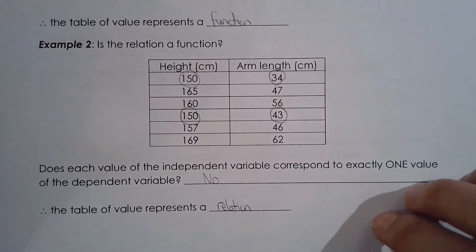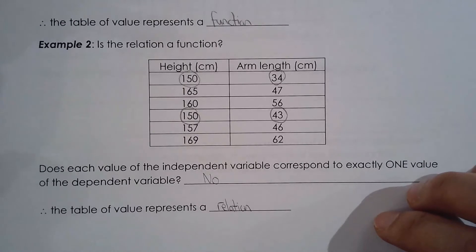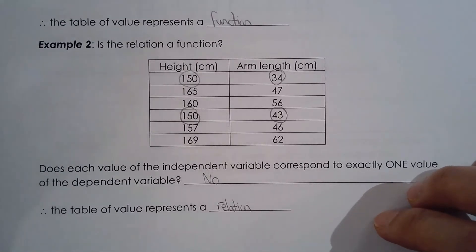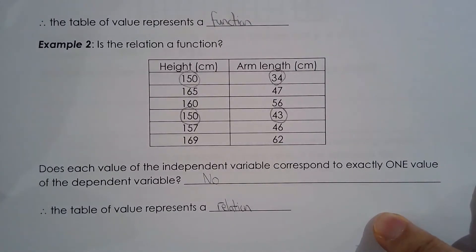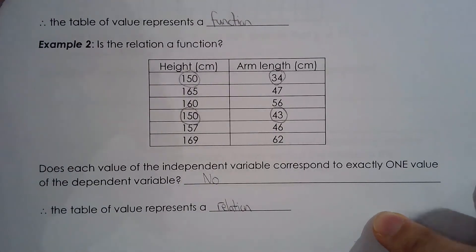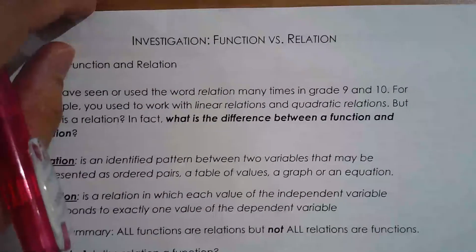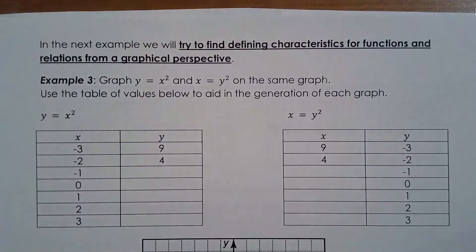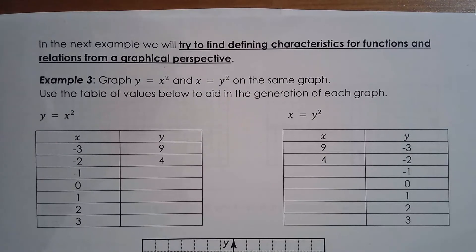If you're given a table, you just have to look at the values of the independent variable and see if the definition checks out: does each value of the independent variable correspond to exactly one value of the dependent variable? Now what if we give you a graph instead? Let's work with two graphs: y equals x squared and x equals y squared.